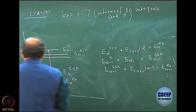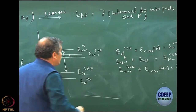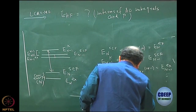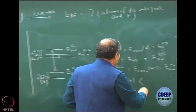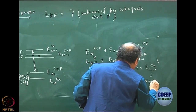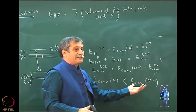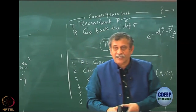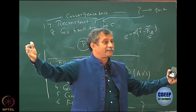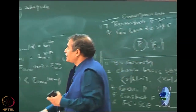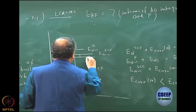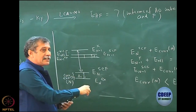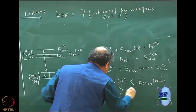Now what turns out is a very interesting effect. It is well known that the magnitude of E_corr(N) is less than - or rather, since these are negative, the magnitude is greater - than E_corr(N-1). The correlation energy lowering is greater for N electrons than for N minus 1 electrons. This is simple to understand: as N increases, overall energy increases and the correlation lowering also increases. So this gap delta_1 is much higher than delta_2.